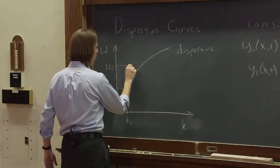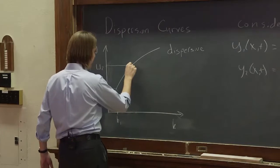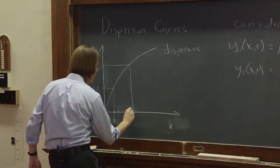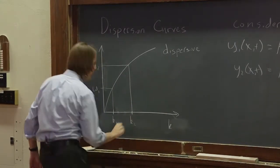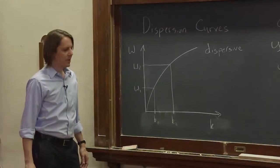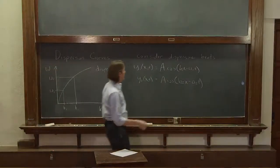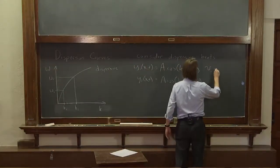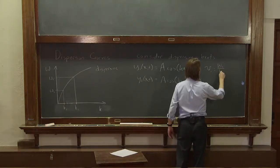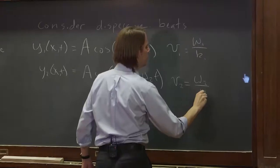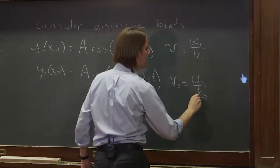And omega 2 we can draw across. And oh, we don't get it till there and down there. And there's k2. So the velocity 1 is omega 1 over k1. The velocity 2 is omega 2 over k2.